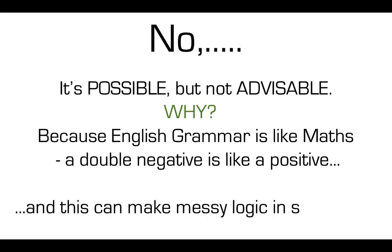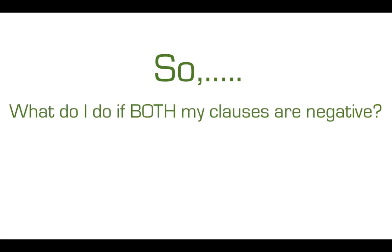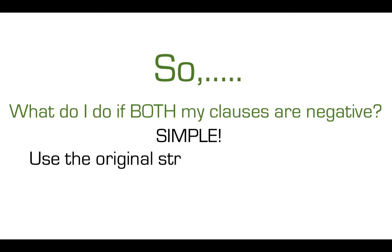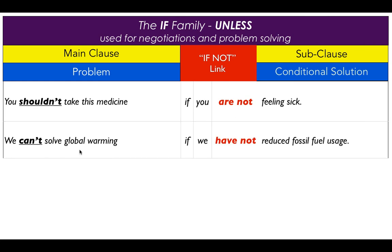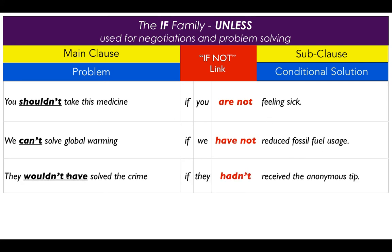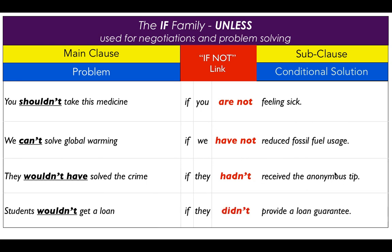A double negative is like a positive, and this can make messy logic in sentences. So what do you do if both your clauses are negative? Simple — use the original structure. For example: you shouldn't take this medicine if you are not feeling sick. We can solve global warming if we have not reduced fossil fuel usage. They wouldn't have solved the crime if they hadn't received the anonymous tip. And students wouldn't get a loan if they didn't provide a loan guarantee.